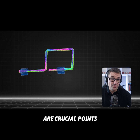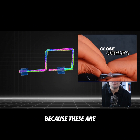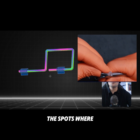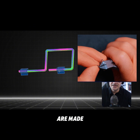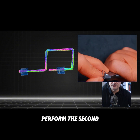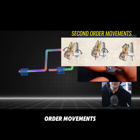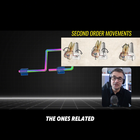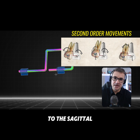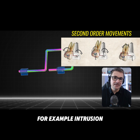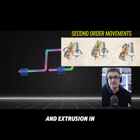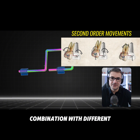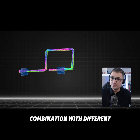It's also very important to memorize the angles of the loop. These are crucial points because these are the spots where opening or closing bends are made in order to perform the second-order movements — the ones related to the sagittal perspective. For example, intrusion, extrusion, and intrusion and extrusion in combination with different rotations.